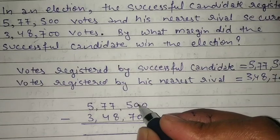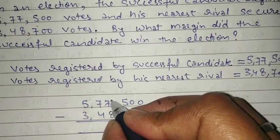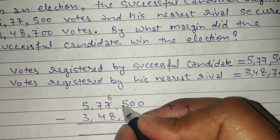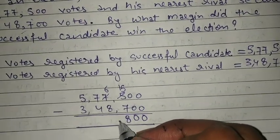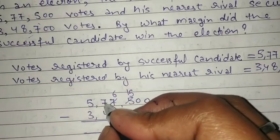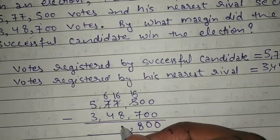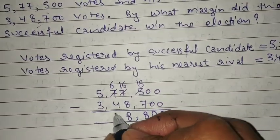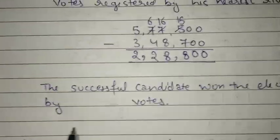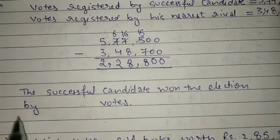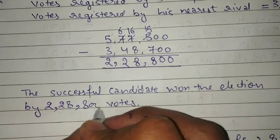In the ones and tens place: 0 minus 0 is 0, 0 minus 0 is 0. In the hundreds place we cannot subtract 7 from 5, so we borrow from the next place — the thousands digit becomes 6 and hundreds becomes 15. So 15 minus 7 is 8. We cannot subtract 8 from 6 in thousands, so borrow again — that digit becomes 1, thousands becomes 16. 16 minus 8 is 8, 6 minus 4 is 2, 5 minus 3 is 2. The successful candidate won the election by 2,28,800 votes.